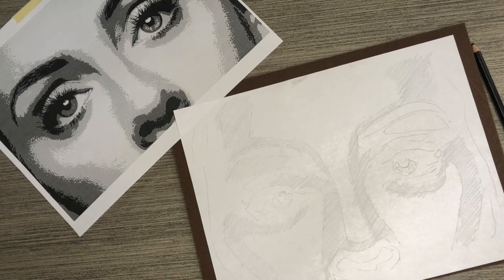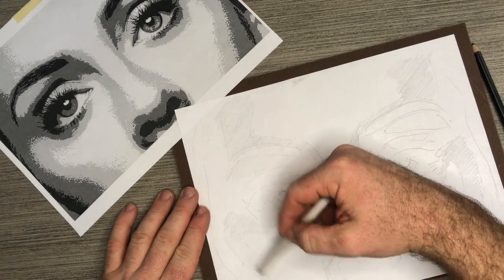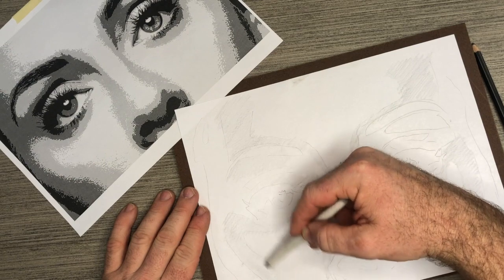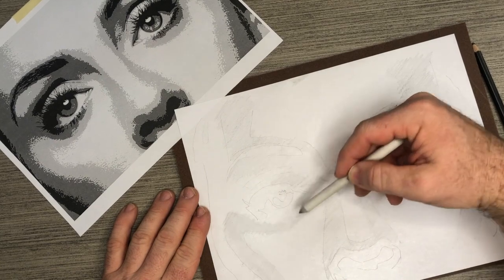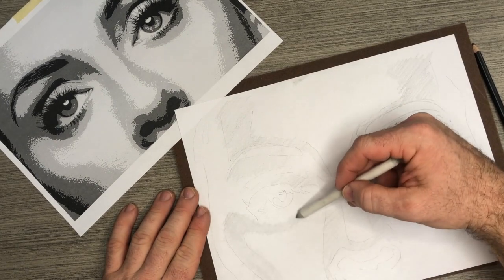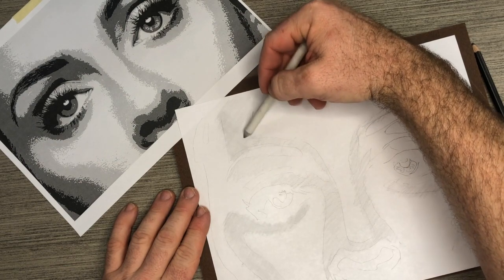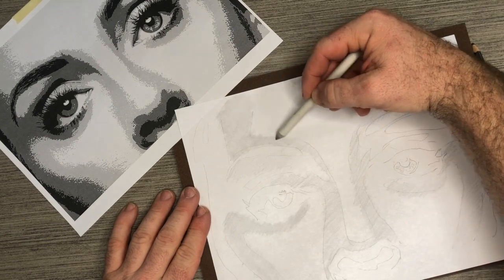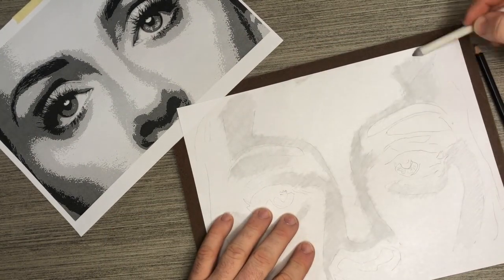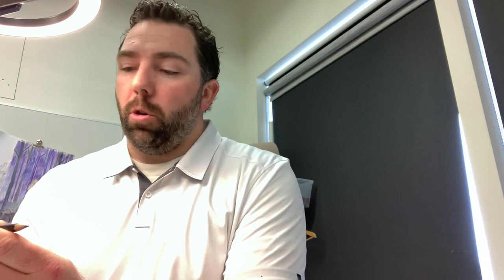Now use the blending stump going in the opposite direction from the way you shaded, making long smooth strokes to smooth out the values. If it gets choppy, switch to circles instead of straight back and forth to avoid hard lines.